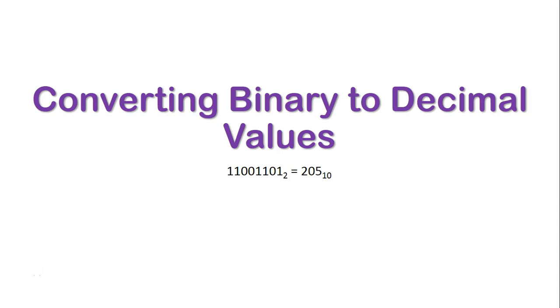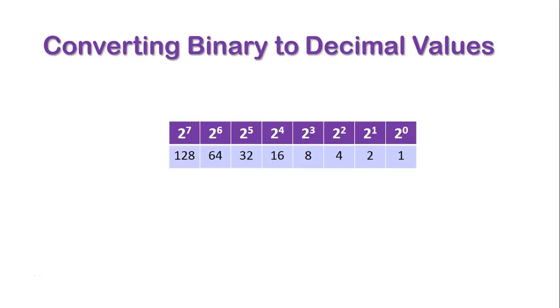We're now going to take a look at converting binary values to decimal values. When doing this conversion, we need to first understand the base-2 format that binary values are arranged in. This table outlines the values which align with where specific zeros and ones fall in a binary digit.